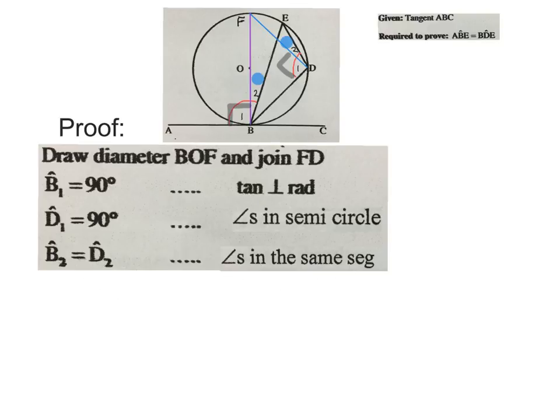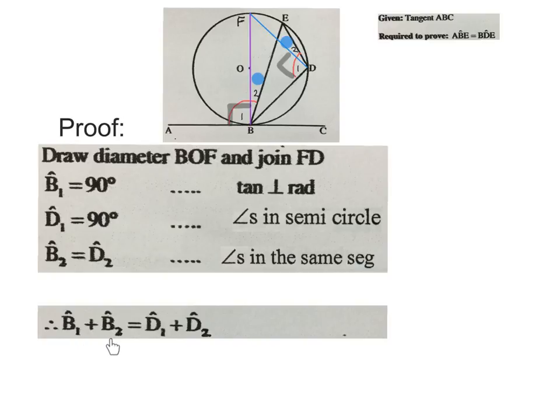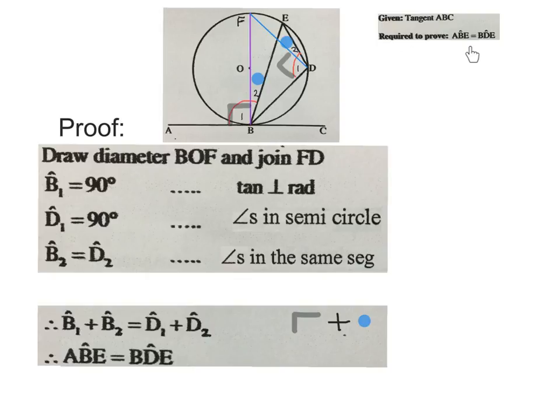Then we write angle B1 plus angle B2 is equal to angle D1 plus angle D2. If you look at it you can see they're going to be the same because they are the same in this respect. Then you just write it in the way they asked us originally. We were required to prove ABE is equal to BDE, so just write: angle ABE is equal to angle BDE, the two red ones.